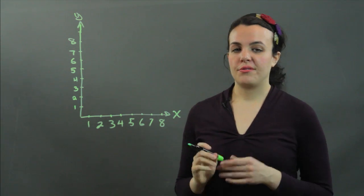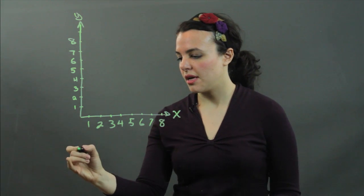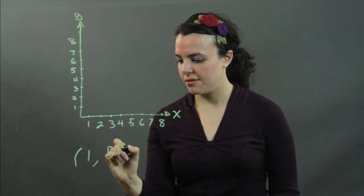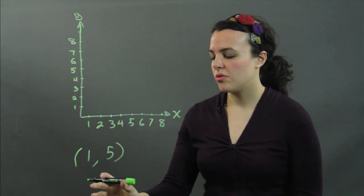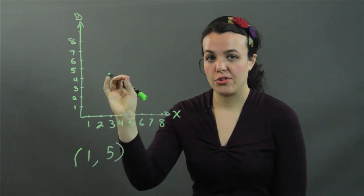Now, often you're given what is called a coordinate pair that looks like this. Let's say we have 1, 5. This is called a coordinate pair. It denotes a point that you will find on your graph.